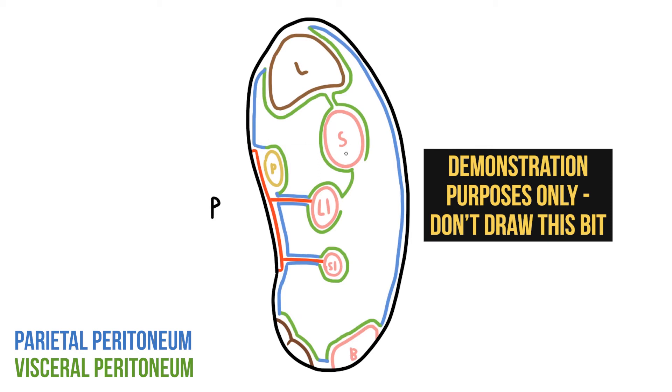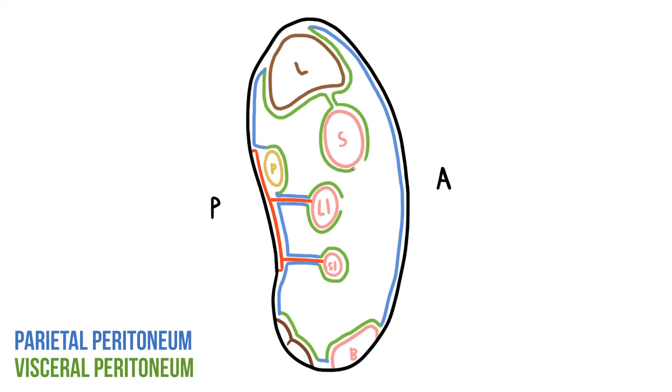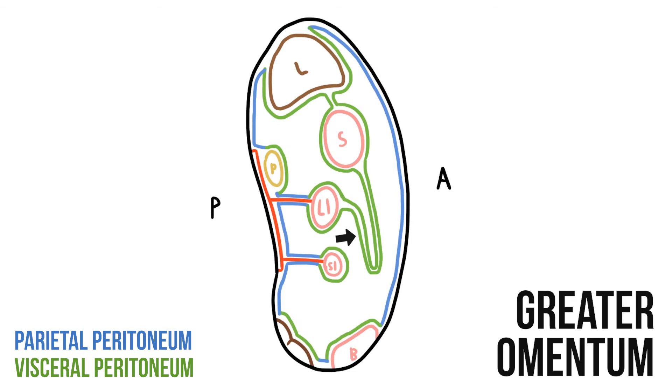However, instead of passing directly to the colon, it does something odd. Both layers overshoot completely, plunging down into the abdomen before working their way back up towards the colon. Eventually these four layers fuse together to create a multi-layered structure known as the greater omentum.